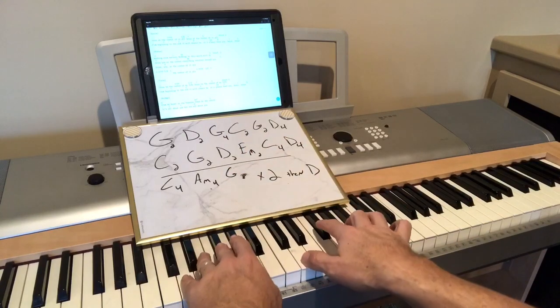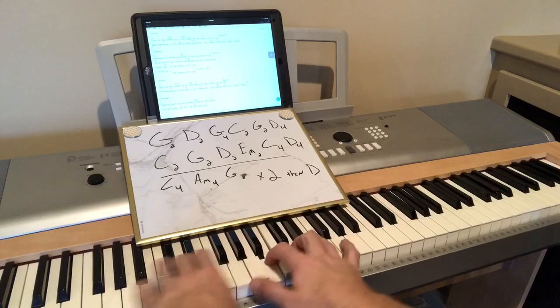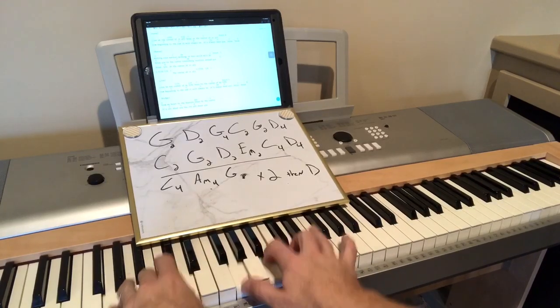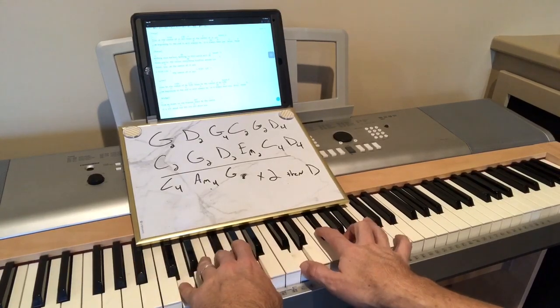So, both right. Then you go to a D2. Both do a D, right. So it goes, Jesus be the center of it all. Two, three, four.